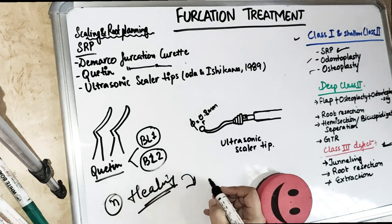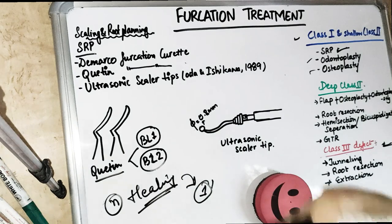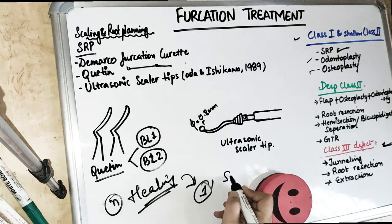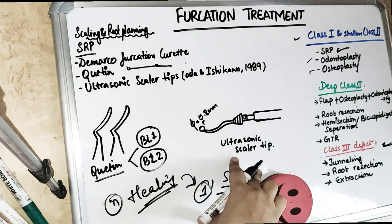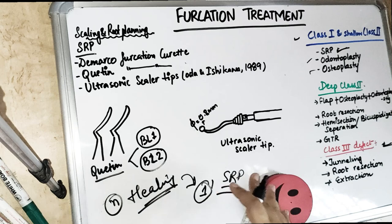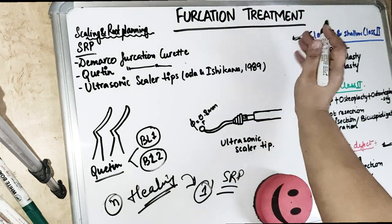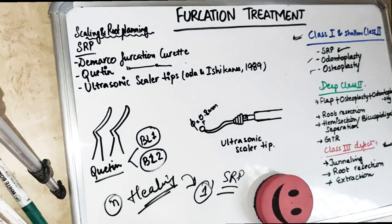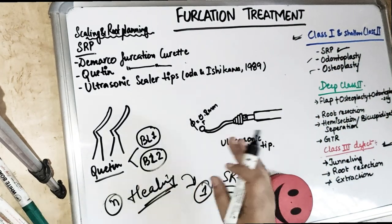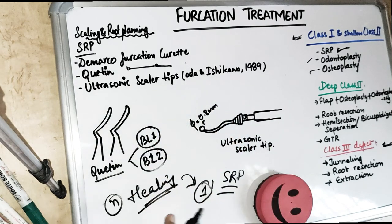As soon as you are planning any surgery, whether it is Grade 1, 2, or any grade — or even a pocket — you are going to do scaling and root planing first. This is the first approach. If you do scaling and root planing it can, to some extent, also resolve Grade 1 defects as well as shallow Grade 2 defects.